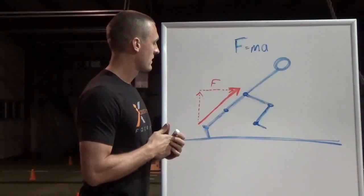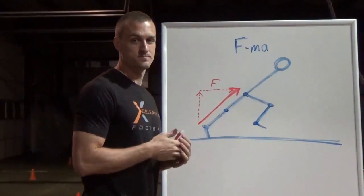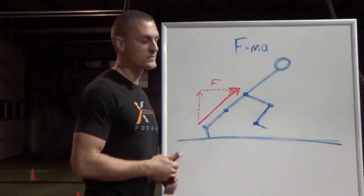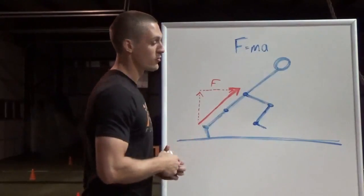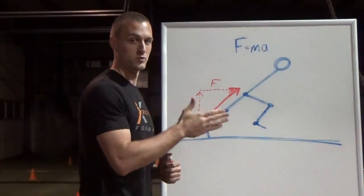So how do we do that? Well, one, we just push more force into the ground. You push more force into the ground, the ground pushes more force back. That's going to increase your horizontal force component. You're going to get more acceleration.